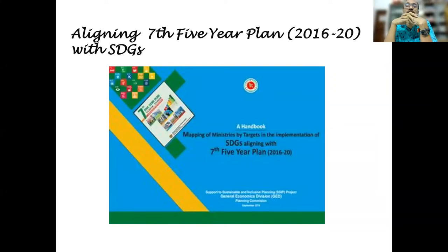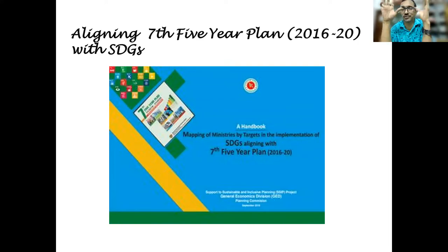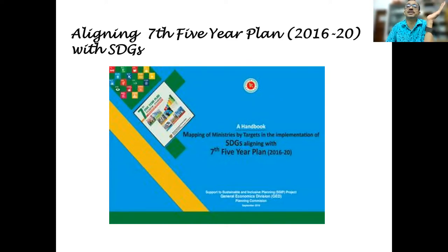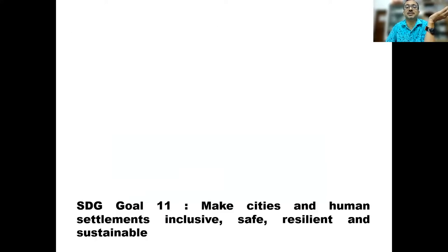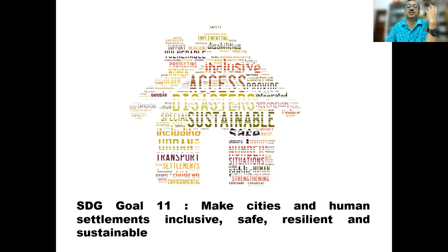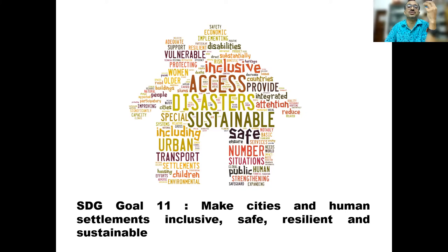We have SDG implementation mapped within the five-year plans. Every five-year plan, the government creates a matrix assigning functional responsibilities to different ministries. For SDG 11 — making cities and human settlements inclusive, safe, resilient, and sustainable — the government assigned responsibilities to different ministries to ensure that poor people get access to housing that is disaster-resilient and sustainable.